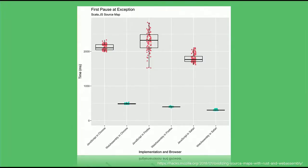Nick Fitzgerald from the Rust WebAssembly team did a really nice benchmark, writing the same benchmark in both JavaScript and WebAssembly and running it in different browsers. JavaScript is red, WebAssembly is blue. Yes, WebAssembly is faster, but the main takeaway is that JavaScript has the spread — it is somewhat unpredictable in how long it takes. WebAssembly is spot on, always at the same time, even across browsers. WebAssembly gives you more predictable performance than JavaScript.